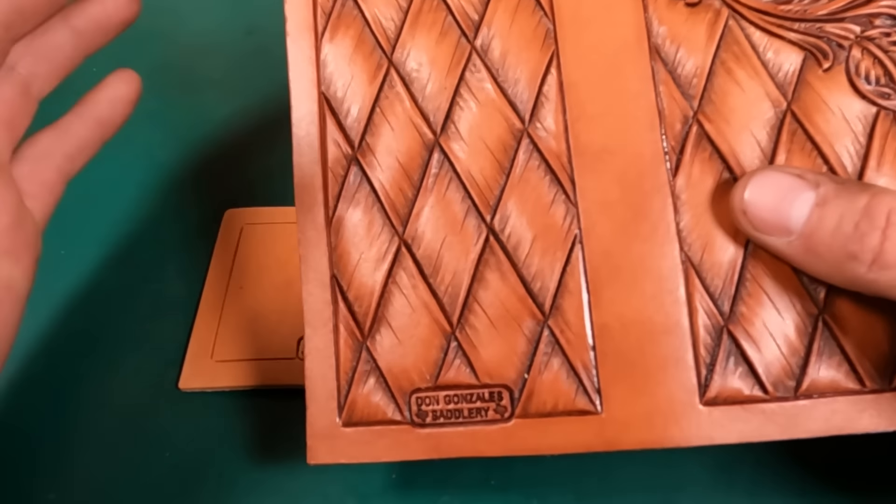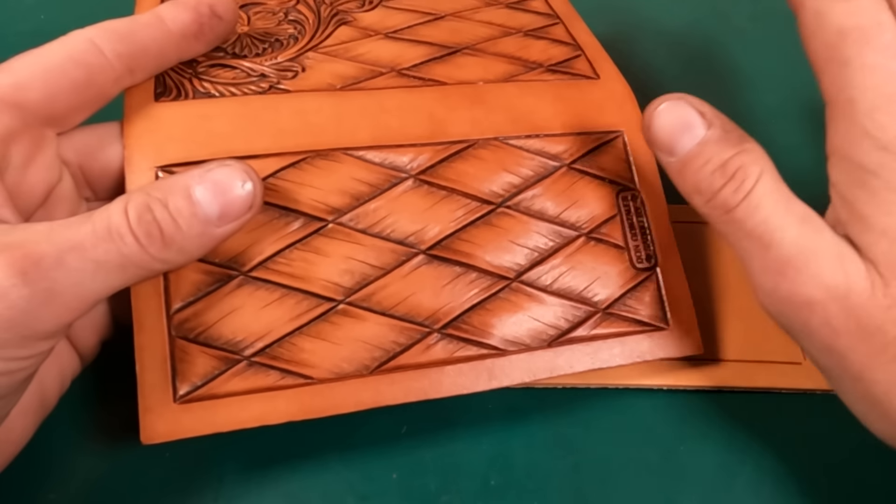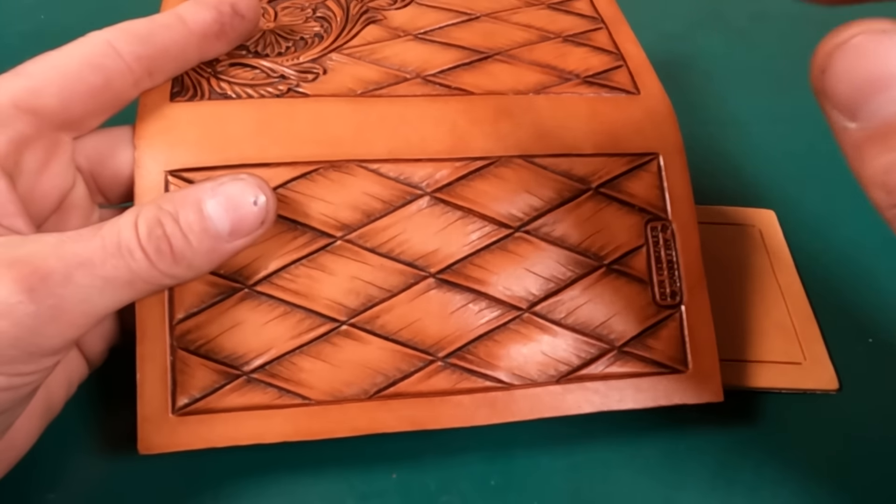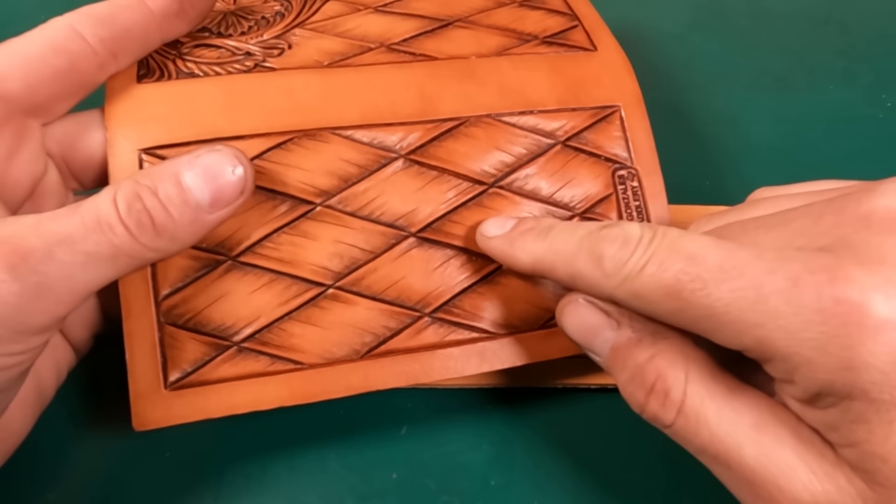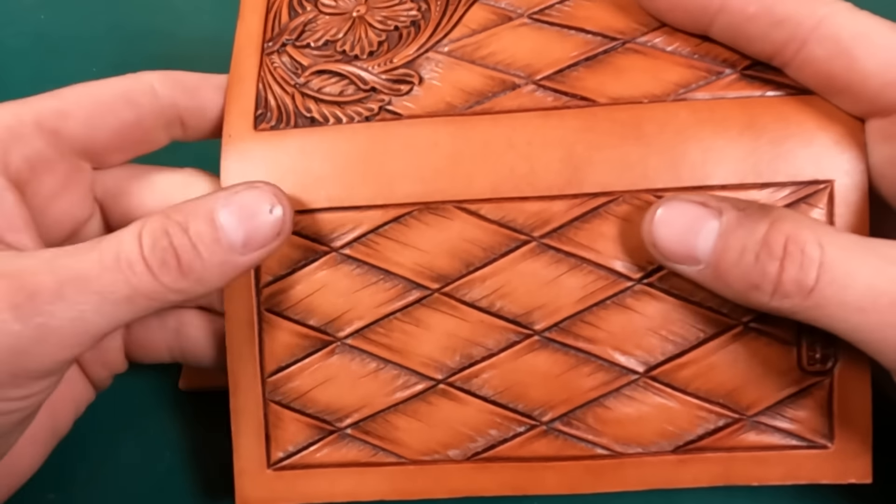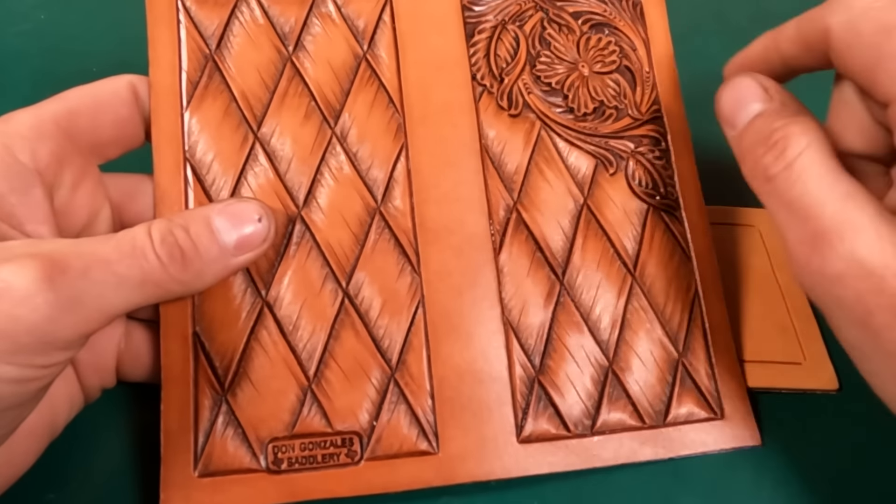Last year we did a saddle. If you've seen our full saddle build video, I'll put a link down in the description. On that saddle I did this type of tooling. I had already tooled it on some gun slings and wallets and small items. I think it's really pretty and contemporary looking, and customers seem to really gravitate towards this type of pattern.